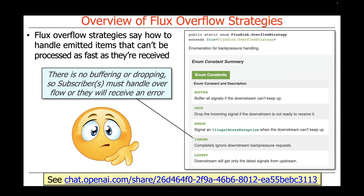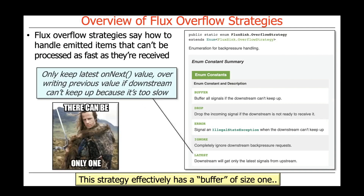My advice would be to ignore "ignore" and choose one of the other strategies instead. The last strategy is called latest. What this says is: only keep the latest on-next value, overriding previous values, if the downstream can't keep up because it's too slow. The best way to think of this is it's basically a buffering strategy with a buffer of size one — whenever something comes in and can't be immediately sent downstream, the latest value is stored in that buffer, and that latest value is what will be sent downstream.